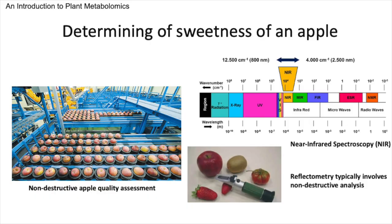Have you ever wondered how we can determine the sweetness of an apple before even taking a bite? The answer lies not in tasting but in innovative technology. One of the most fascinating methods is called near-infrared spectroscopy, or NIR for short. It's a technique that doesn't require us to slice, juice, or alter the apple in any way. NIR spectroscopy measures an apple's sweetness by shining near-infrared light on it. The light is absorbed and reflected differently by the fruit's internal components like sugars and acids. A sensor captures the reflected light and algorithms analyze the data to determine the BRIX level, which indicates sweetness. This process, where we use datasets of apple sweetness levels and NIR measurements to make predictions, is known as machine learning.